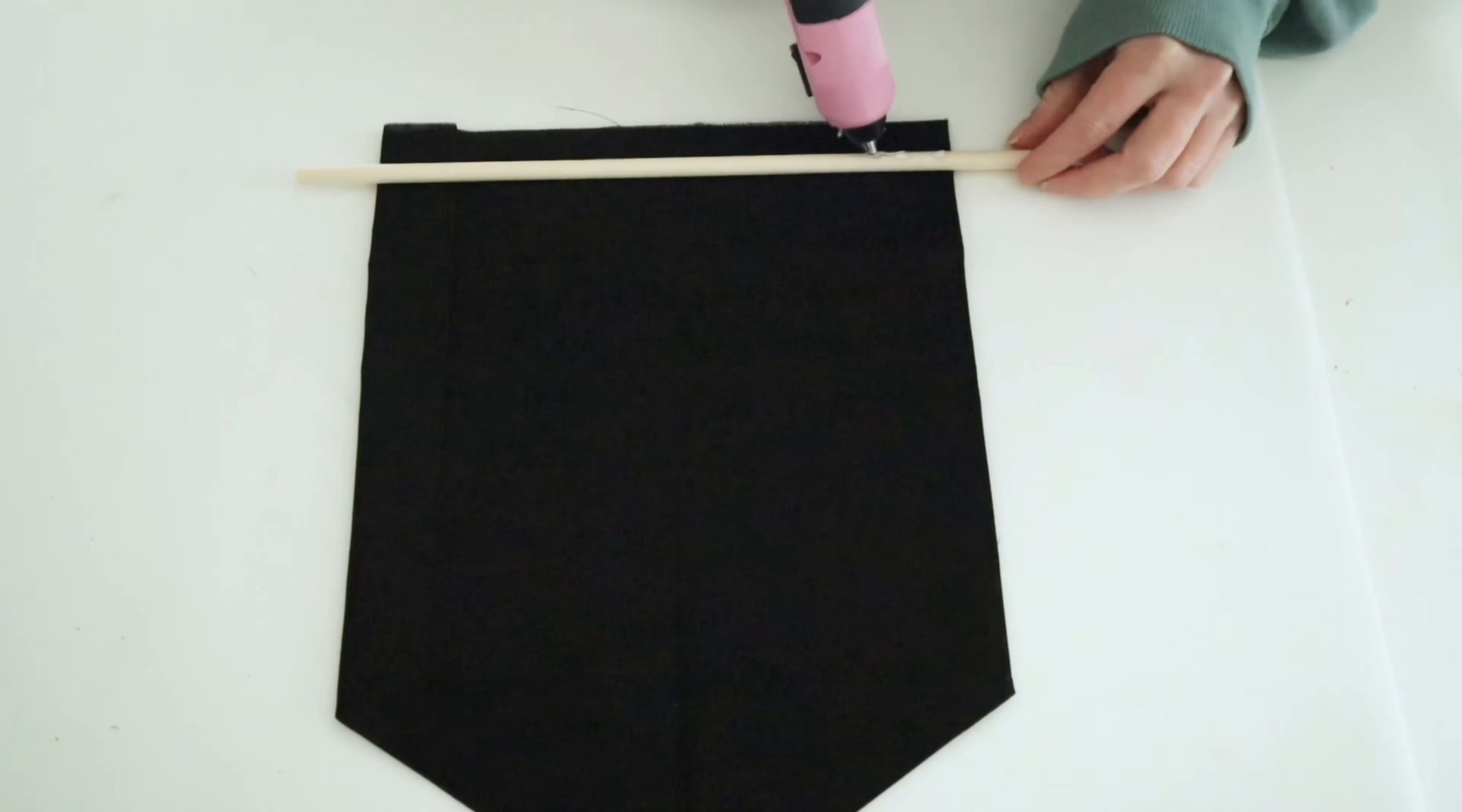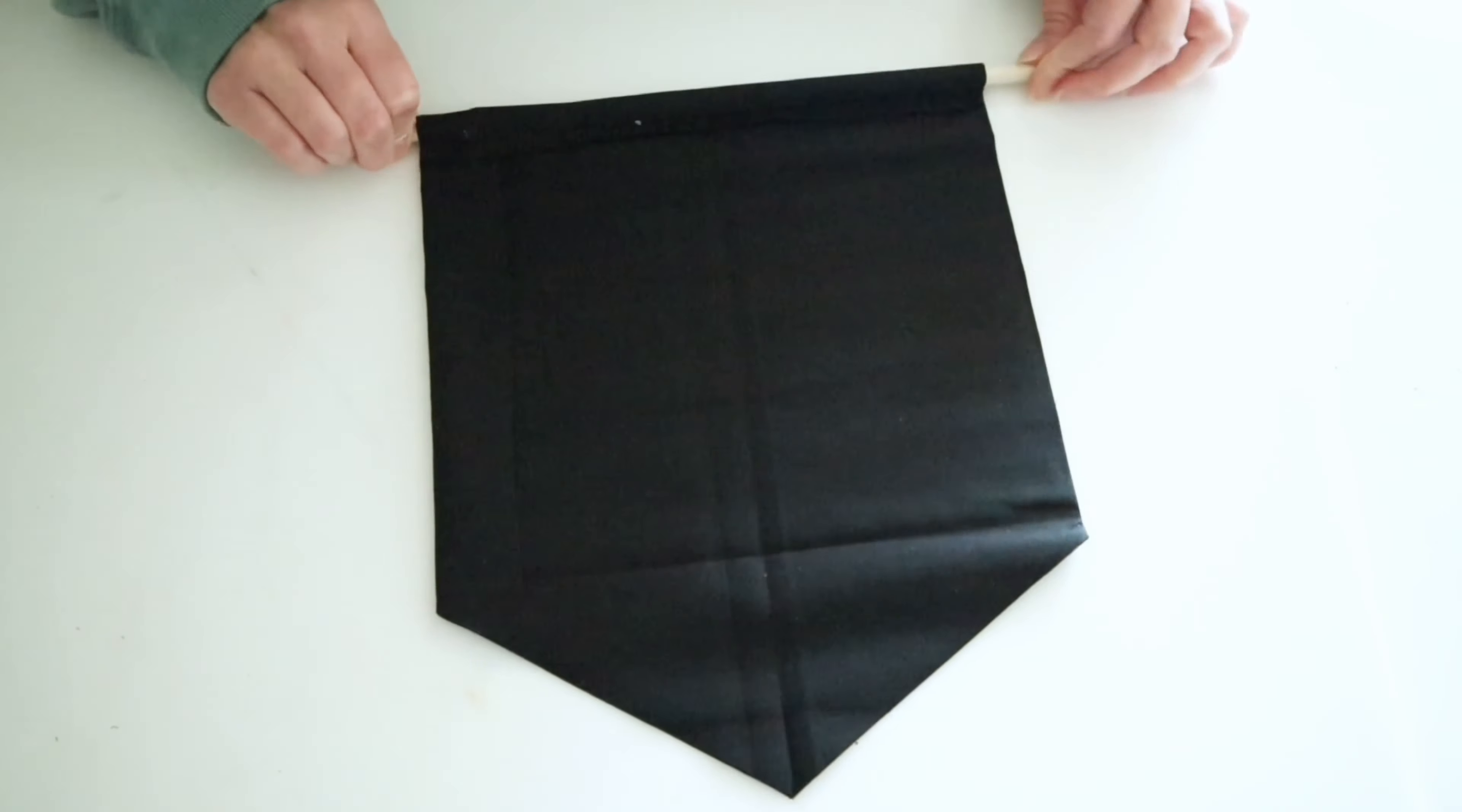Then I just added some hot glue to that dowel rod and I'm going to roll the top of this banner down over it.